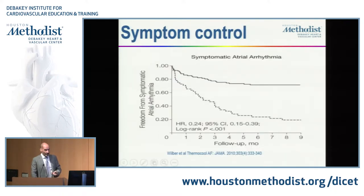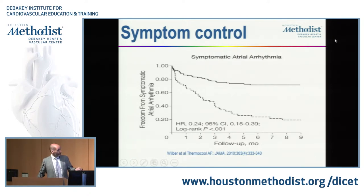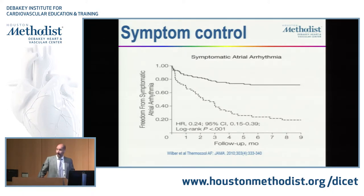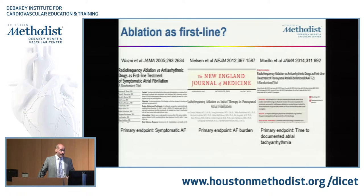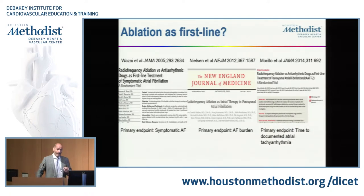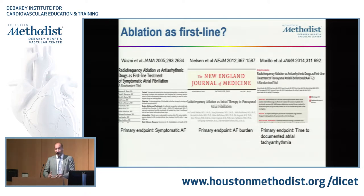Ablation works pretty well at reducing symptoms compared to antiarrhythmic drugs. If you look at ablation versus antiarrhythmics, it's pretty good at eliminating symptoms — around 70 to 80 percent. These are patients that have failed previous antiarrhythmics. Is ablation an appropriate first line? There have been several studies that show variably that ablation does better than antiarrhythmics as a first line of treatment. But that's not the same as saying it should be done first, because some patients will respond to antiarrhythmics — statistically less than ablation, but what's wrong with trying that first?